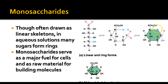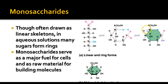In the ring structure, there's an oxygen in the ring, and we're going to go clockwise to number the carbons: one, two, three, four, five, and then the sixth one is attached outside the ring. That's generally the structure we'll see on carbohydrates — counting clockwise from the oxygen, with the last carbon usually outside the ring.